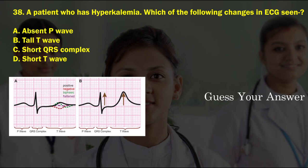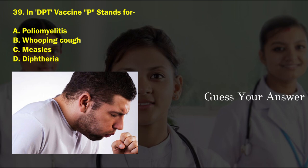A patient who has hyperkalemia — which of the following changes in ECG are seen? Option A: absent P wave, option B: tall T wave, option C: short QRS complex, option D: short T wave. The correct answer is option B, tall T wave.